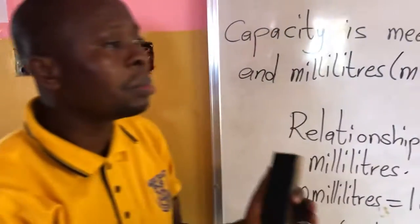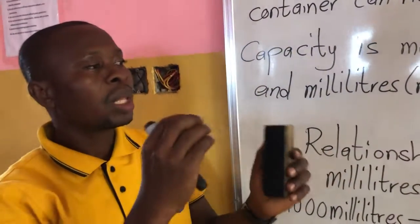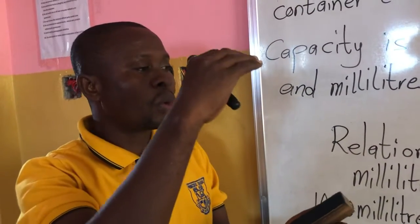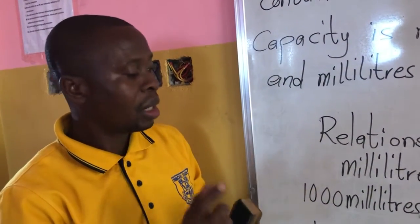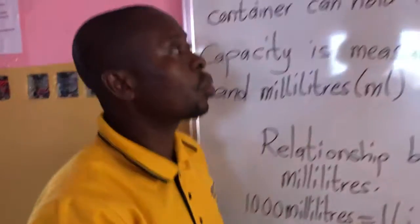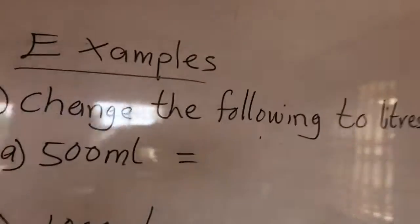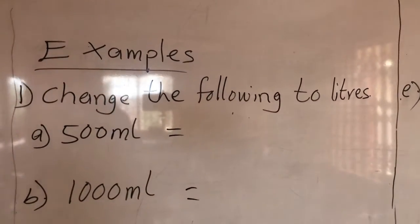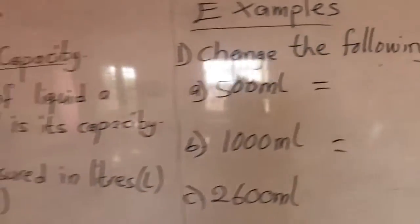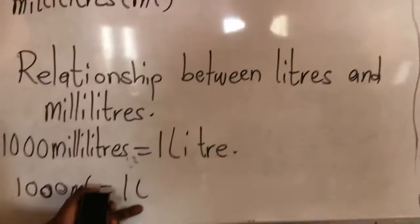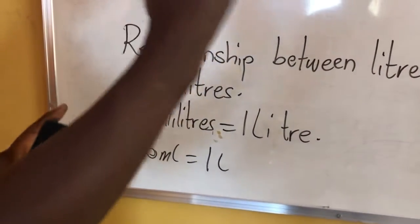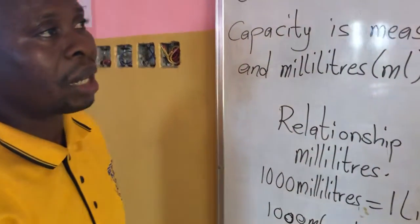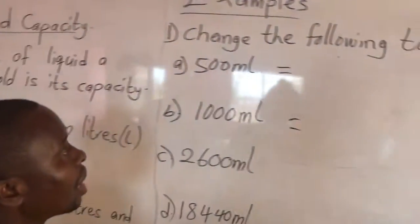When a container is labeled 1000 ml and it is full, it gives us one liter. Now let's try to change from milliliters to liters. We already know that 1000 milliliters gives us one liter, so when we are changing from ml to liters, we divide by 1000.